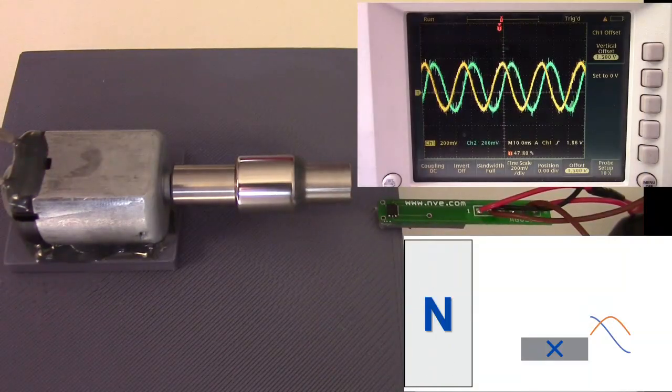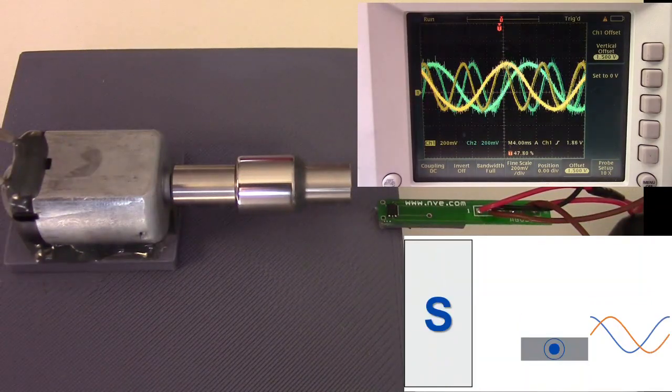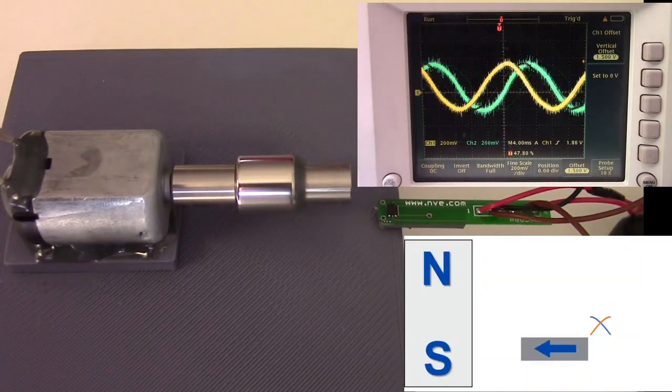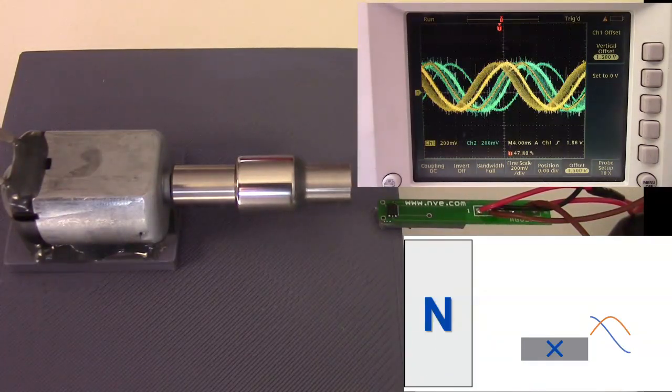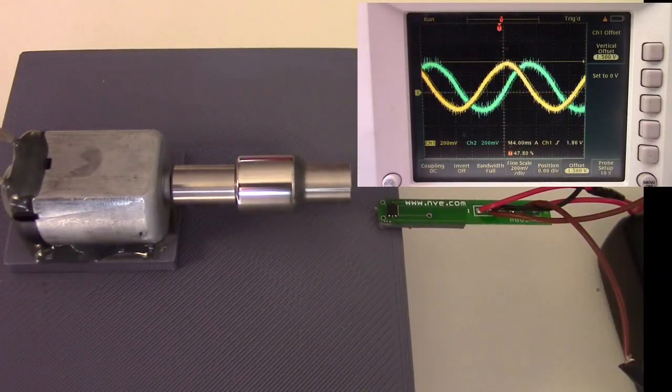This configuration is ideal for angle sensing when spacing requirements are tight, and standard on-axis angle sensing is not an option. The magnet rotates, and the sensor reads the angle to the same high accuracy as the on-axis configuration. Perfect.